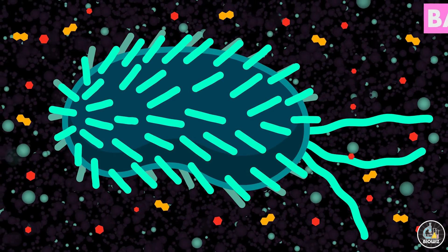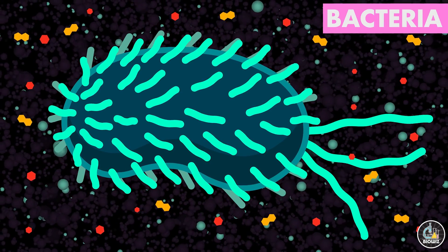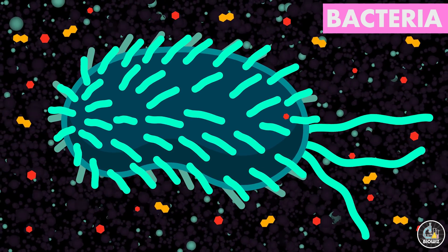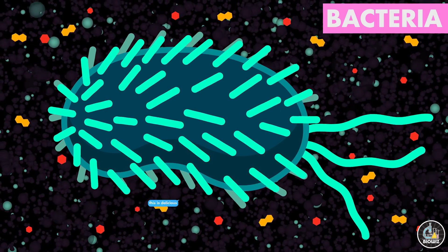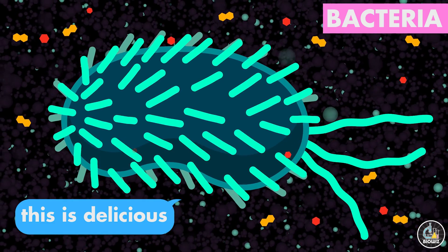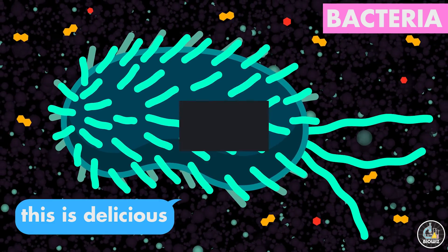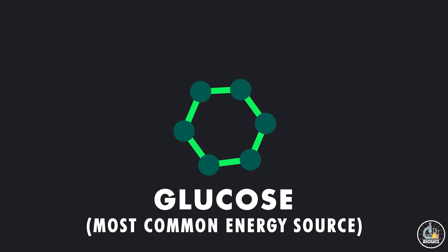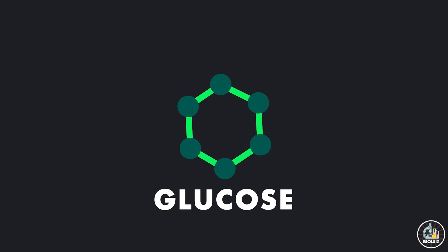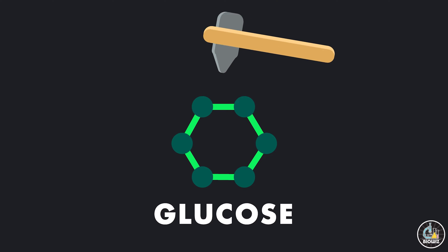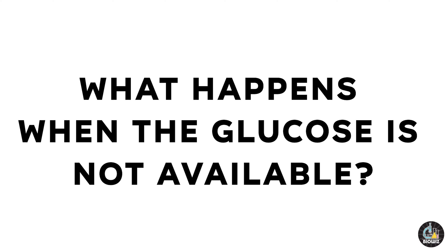This is a bacteria, one of the most simple and earliest of the life forms found on our earth. Just like all the other cells, the bacteria also needs energy to carry out its day-to-day activities to stay alive. For this, the bacteria uses the most common source of energy, glucose, which is in fact used by a vast majority of cells. The covalent bonds in the glucose are broken down to release energy, which is then stored in the form of ATP.